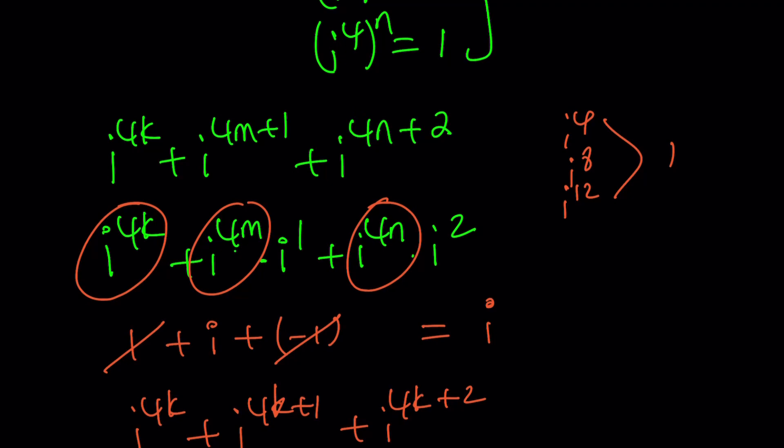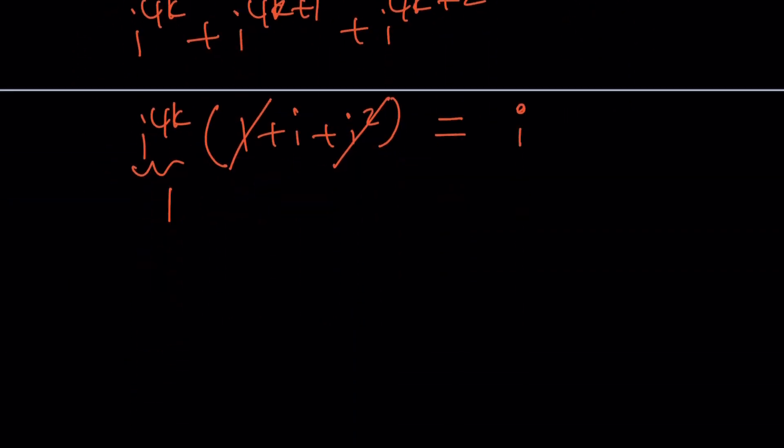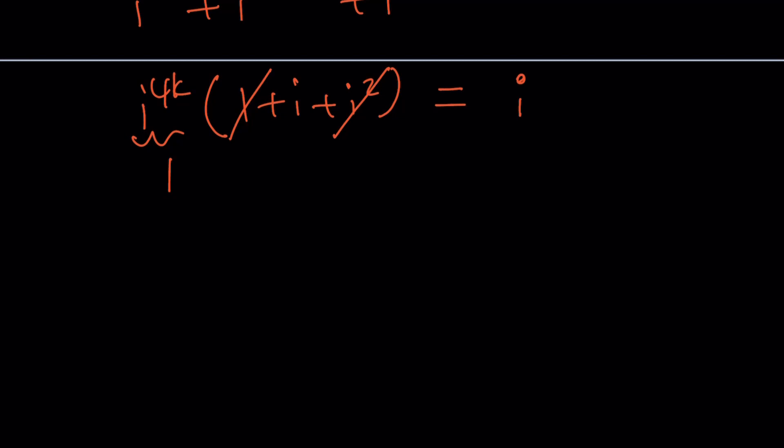Well, here's the thing. It depends on which power you start with. If you start with i to the 1st, i to the 2nd, and then i to the 3rd, this is going to give you i minus 1 minus i, because i to the 3rd power is negative i, remember? i is going to cancel out, and you're going to end up with negative 1. So you're going to end up with different answers if you add 3 consecutive powers. So it depends on what you start with.